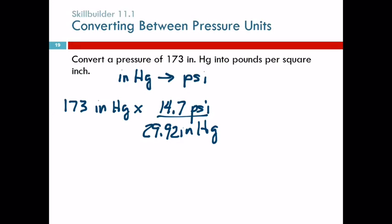We looked at the table. It was 14.7 PSI and 29.92 inches. 173 times 14.7 divided by 29.92. Three sig figs. I'm getting 84.996. So that rounds up to 85.0 PSI. Any questions?